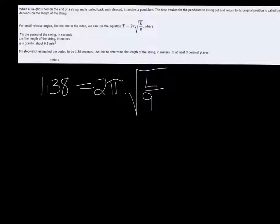So they give us the period, that's 1.38, so I'll put that in place of t. 2π is just 2π, l we're trying to find, and gravity is 9.8.